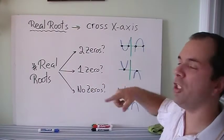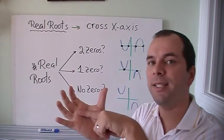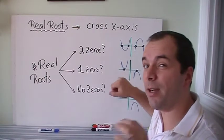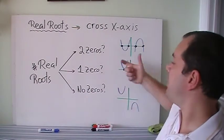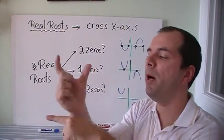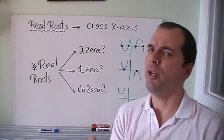Can we have one zero? Yes, if it's just touching, the vertex is right on the x-axis, therefore it just touches the x-axis and crosses once. This is an interesting case because the zeros and the vertex are at the same point. Can it have no zeros? Well yes, because the parabola can be above or below the x-axis and never cross the x-axis.